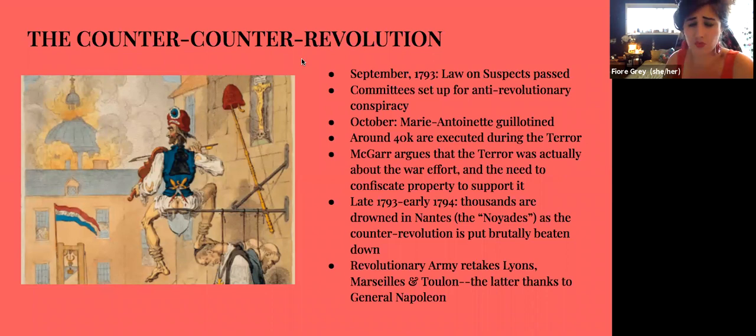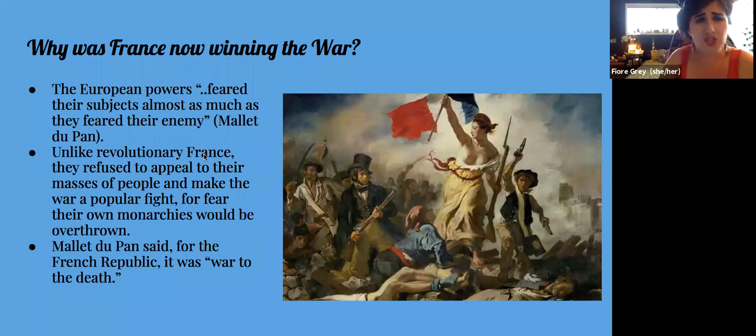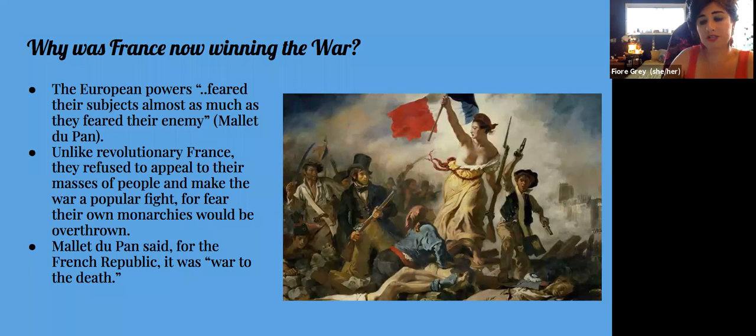The revolutionary army retook Lyon, Marseille, and significantly Toulon — that last one thanks to Napoleon, who was now starting to make a name for himself. France began winning the war. The European powers feared their own subjects almost as much as they feared their enemies — unlike revolutionary France, they refused to appeal to their masses for fear their own monarchies would be overthrown. As one commander put it: 'For the French Republic, it was a war to the death.'